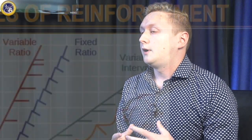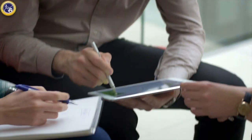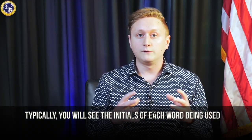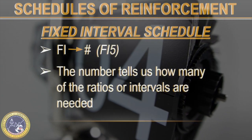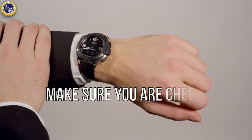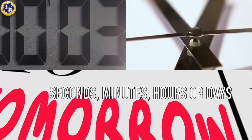Now that we've talked about what each of the individual terms means, it's important that you know a little bit about how you're going to see these schedules written out in a behavior intervention plan. Typically you'll see the initials of each word being used, so a fixed interval schedule would be written as 'FI,' followed by a number. That number tells us how many of either the ratio or interval we need. For intervals, always check the unit of time — it might be seconds, minutes, hours, or days.